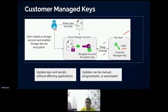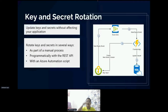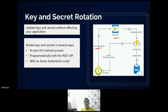Similarly, the secrets which we discussed — we can create the secrets, give a name, and we have the option to change it from manual to other options as well. We can also have a rotation policy. In the key rotation policy, an expiry event is generated — before a specified number of days this event triggers and, based on that, a new version of that key or secret is going to be created. That entire process can be managed with key and secret rotations.